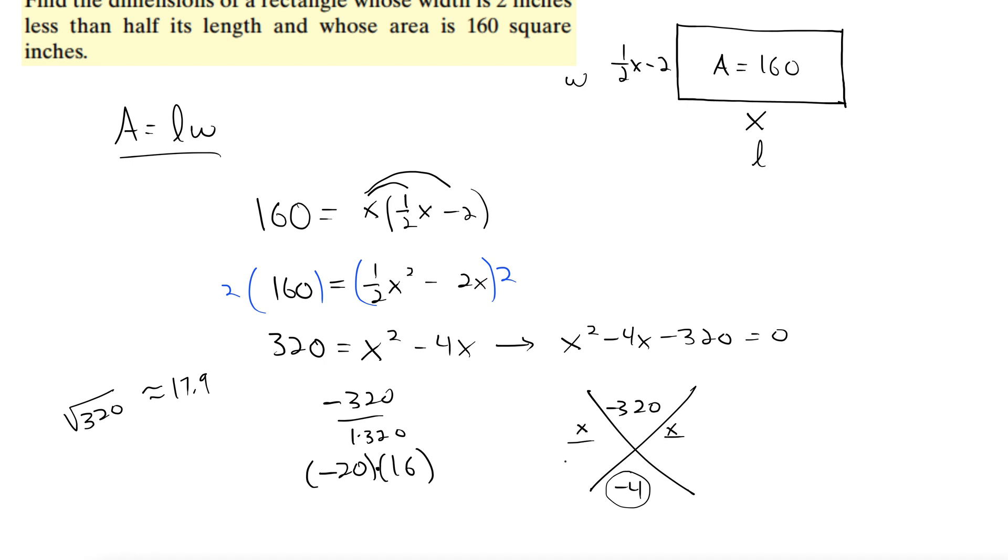Okay, so let's put them in here, negative 20 and 16. So our factors become (x minus 20)(x plus 16) equals 0. Setting each one of these equal to 0 using the zero factor property gives us x equals 20, x equals negative 16. But we don't have negative lengths, so that one's out, giving us x equals 20.